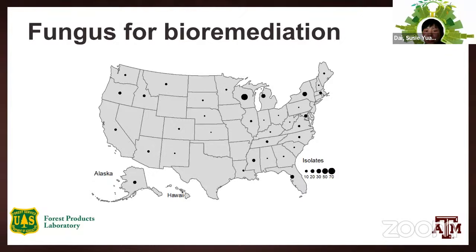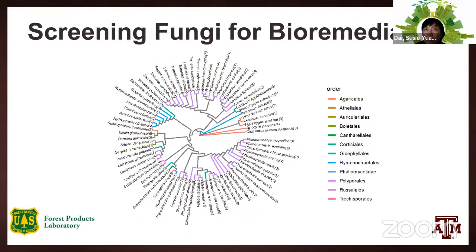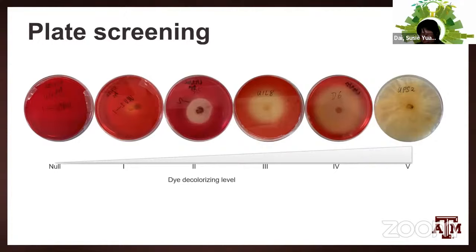Don't look at the Texas data on this map — I have isolates from Texas but they're not currently in this screening analysis. This is a brief summary of about 320 species of isolates we have screened. Sometimes we have more isolates within the same species, depending on library availability from our collaborator at the USDA lab. I'll talk briefly about how we use a plate assay as a quick and rapid screening tool to pick out fungus isolates of interest.